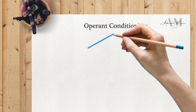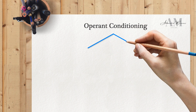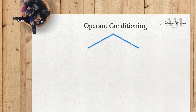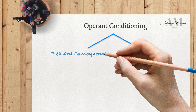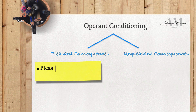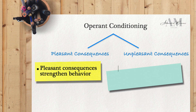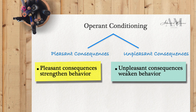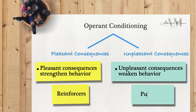At the core of behavioral learning theories lies a fundamental principle: behavior changes in response to its immediate consequence. Favorable consequences serve to reinforce behavior while unfavorable consequences act to diminish it. Put simply, favorable outcomes boost the likelihood of an individual's engagement in a specific behavior, while unfavorable outcomes curb the frequency of that behavior.